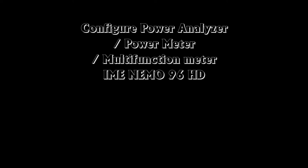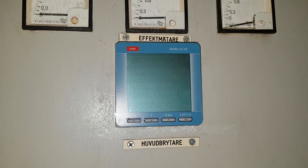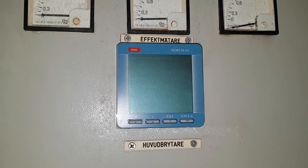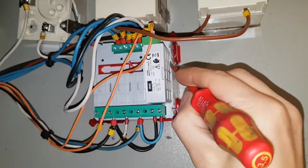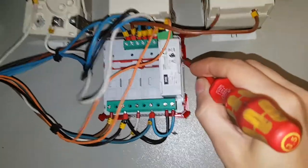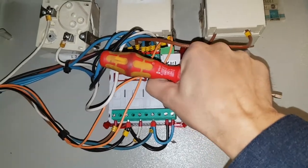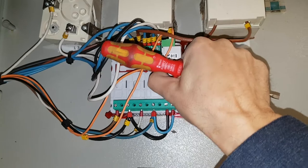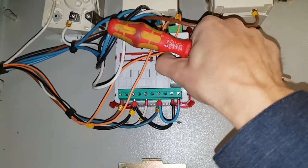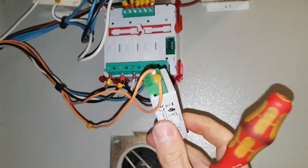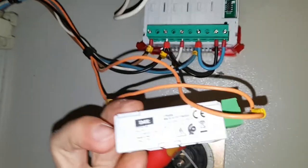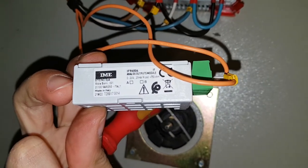In this video I'm going to show you how to configure this EME power meter. It's called Nemo 96HD, and I hopefully can persuade you not to make the same mistake as I did — starting to replace the module that sends 4 to 20 milliamps to the overhead DCS system, in this case ABB 800XA.